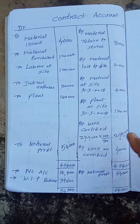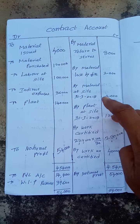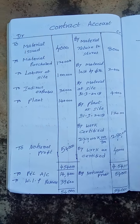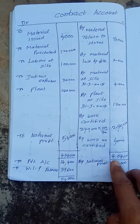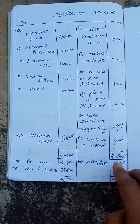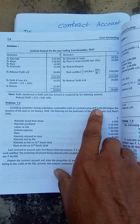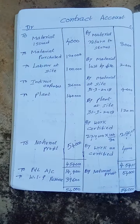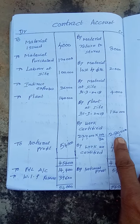We have to account for: works certified, work uncertified, material lost by fire, material transferred to other contracts, closing stock of material, and closing plant. I got a notional profit of 54,000. Here the contract price is 6 lakhs, but work certified is only 2,80,000 — which is less than half (1/2) of the contract price.